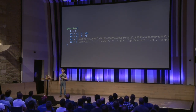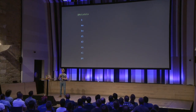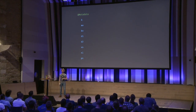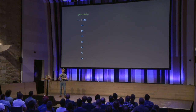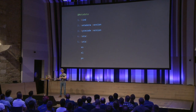What is inside the metadata annotation? There's a few fields — sometimes they appear, sometimes they don't, depending on what you're encoding. There's: the kind; the metadata version; the bytecode version; data1, which is one place for data; data2, which is another place for data; an extra string; an extra int; and the package name.